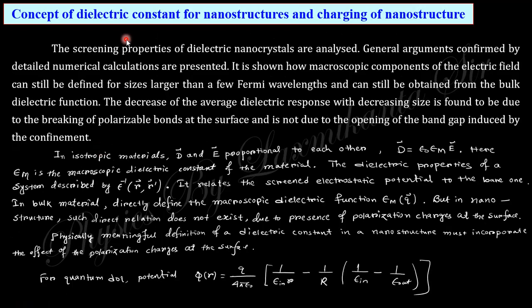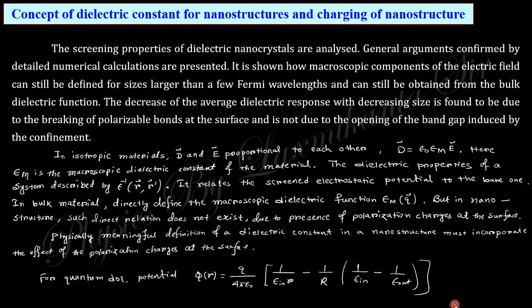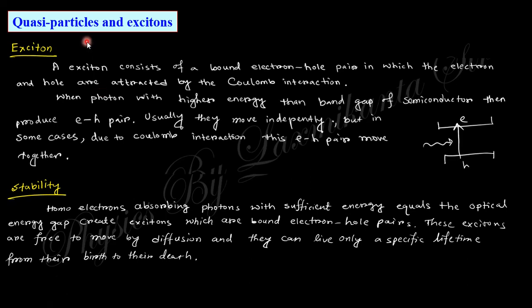Due to these changes, the dielectric property of the material also changes. You can see the potential is expressed in a certain form. In the case of a molecule this is the standard expression, but for nanostructures there is an additional expression arising from the changing properties of the nanostructure material.